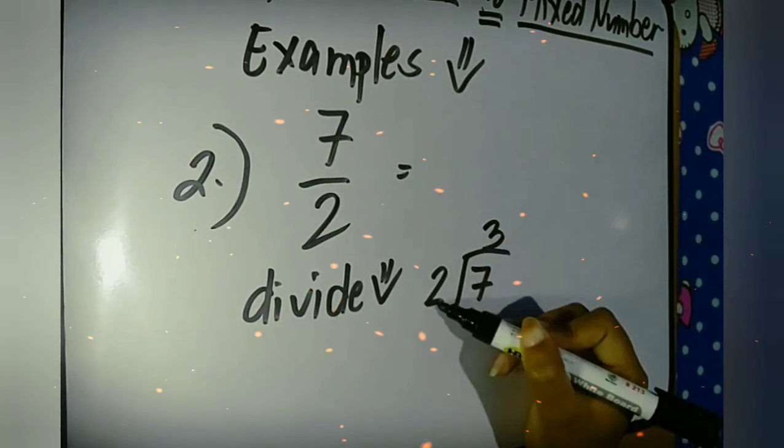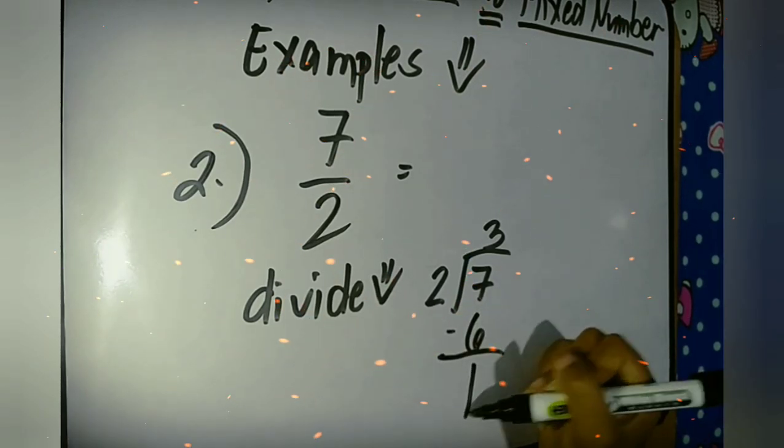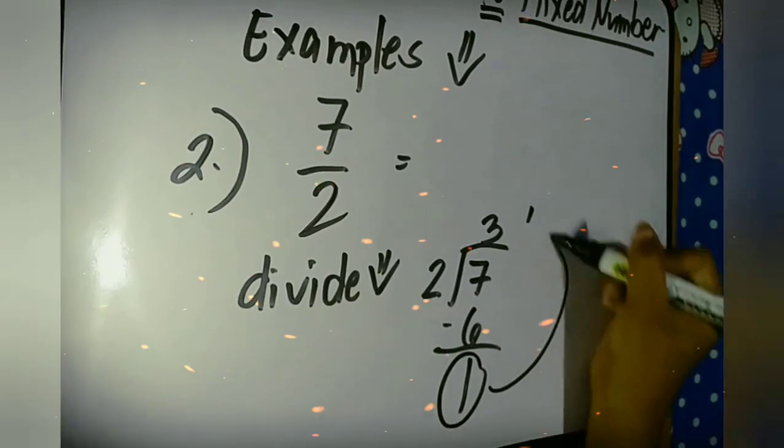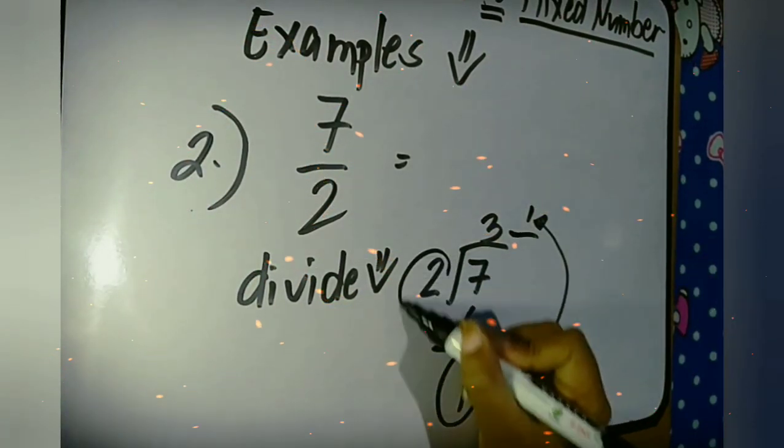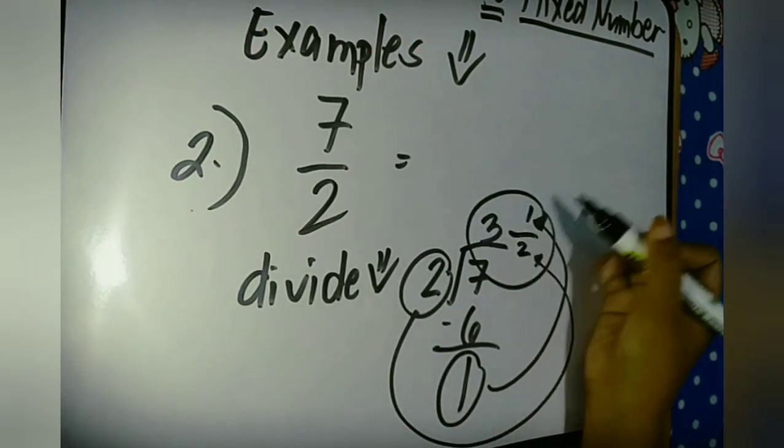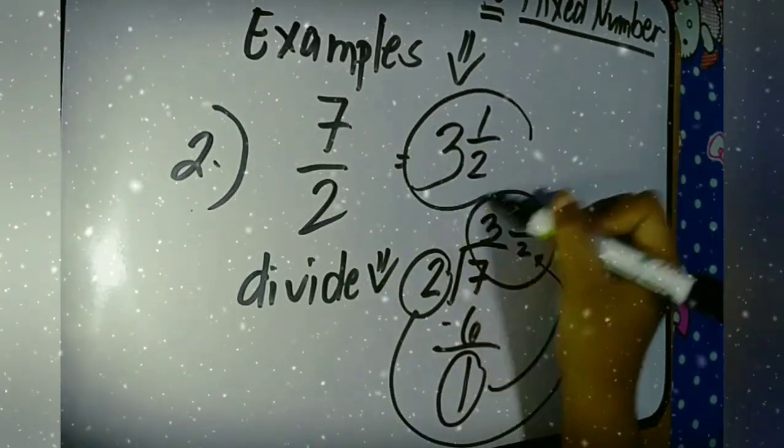And 3 times 2, the answer is 6. 7 minus 6, the answer is 1. And that 1 will become our numerator and the remainder. And then 2 will become our denominator. So our final answer for the mixed number is 3 and 1 half.